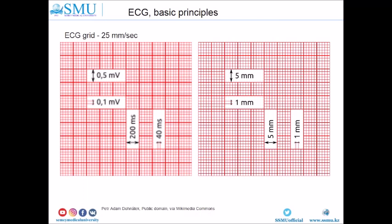As far as voltage, 1 mm stands for 0.1 mV and 5 mm stands for 0.5 mV. If you have a speed of 50 mm/s, in this case one large box represents 100 ms and one small box represents 20 ms.